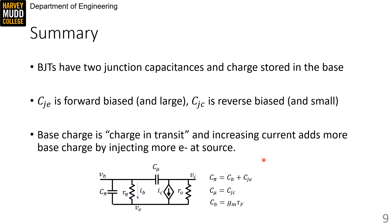CJE is forward biased, so the base-to-emitter capacitor junction cap is large. CJC is reverse biased, so the base-to-collector junction cap is small.